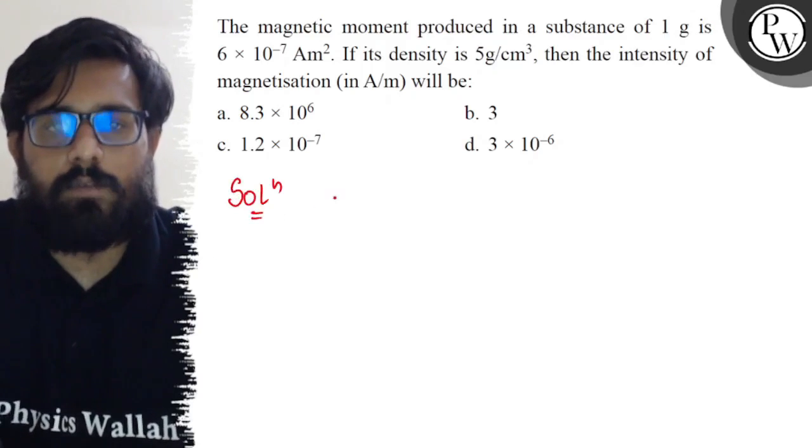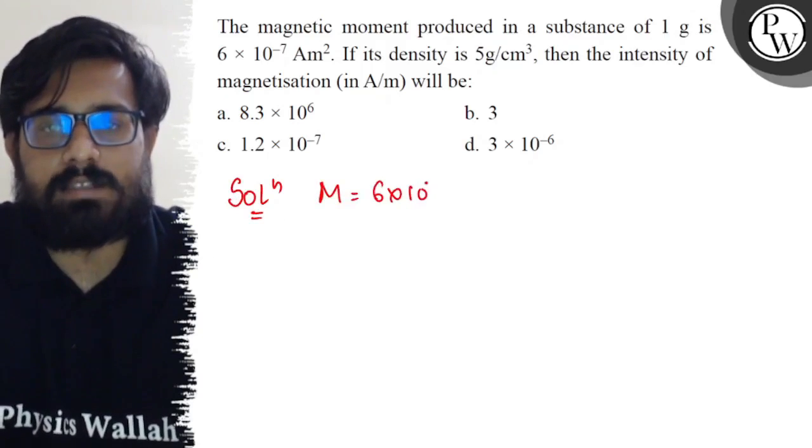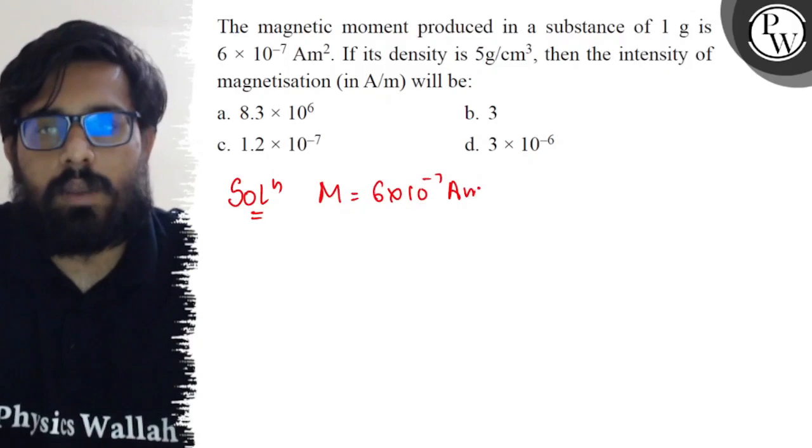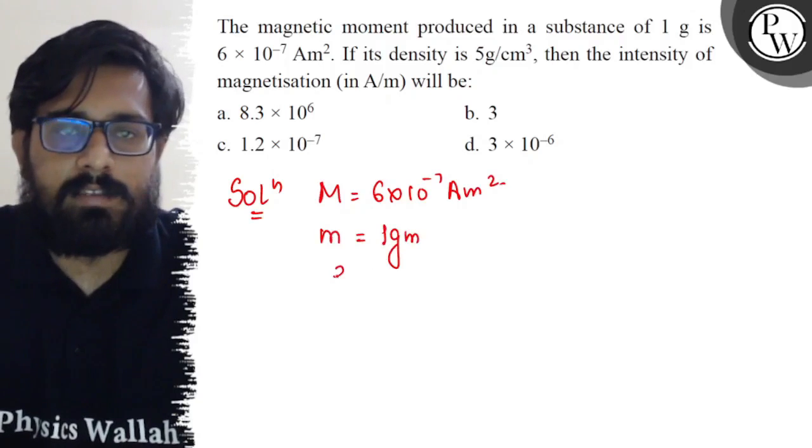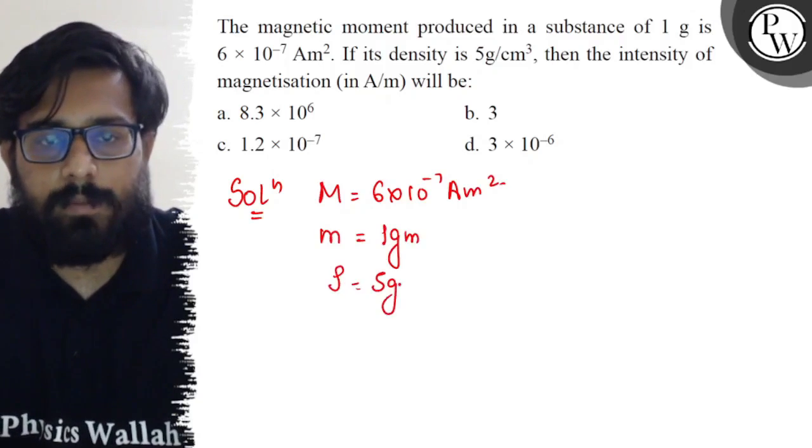In this question, we have the magnetic moment M = 6×10^-7 ampere meter square, with a mass of 1 gram and density of 5 gram per centimeter cube.